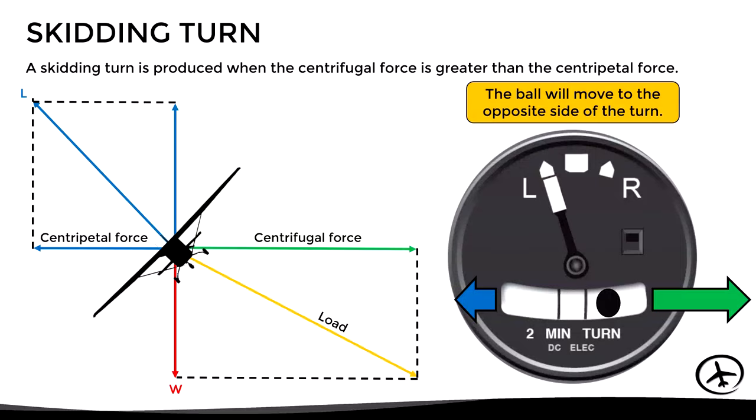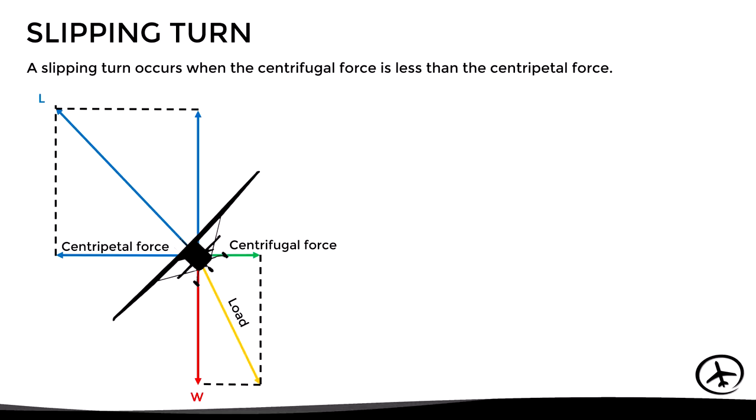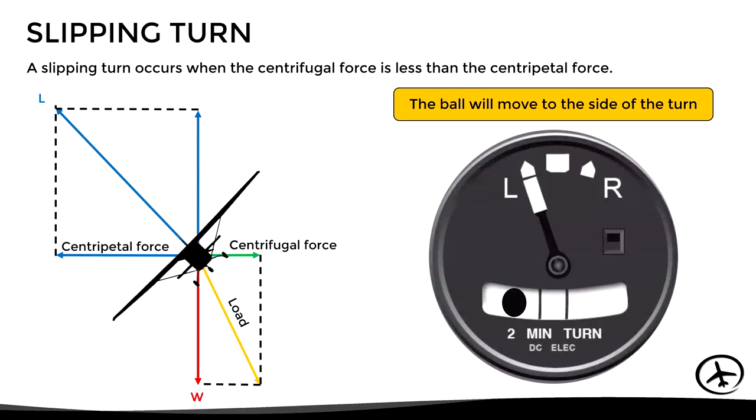The last possible situation is a slipping turn, which is the opposite of a skidding turn. It occurs when the centrifugal force is less than the centripetal force. In this case, the ball moves to the side of the turn. For example, the aircraft is turning to the left and the ball also moves to the left. The inclinometer is a simple instrument — just a ball free to move inside a capsule — and does not rely on other systems to function.